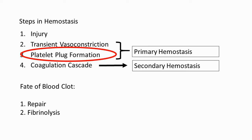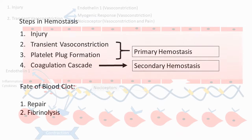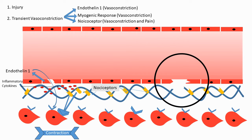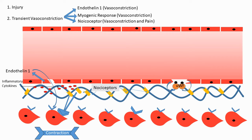Now we'll move on to the third step: formation of the platelet plug, which marks the end of primary hemostasis. One of the substances released by damaged endothelial cells is von Willebrand factor, which is very important as the foundation of what follows. This factor binds onto the damaged subendothelial collagen, since injury damages both the endothelial lining and the subendothelial connective tissue underneath.